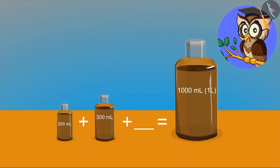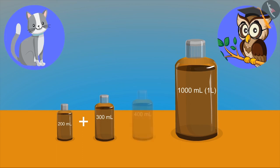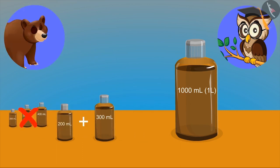Now, see, in one bottle, we have 200 ml of oil and in the other, we have 300 ml of oil. Now, tell me, to fill a 1000 ml bottle or 1 liter bottle, how much oil will you need? Is the answer 400 ml? Look carefully.